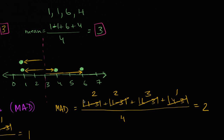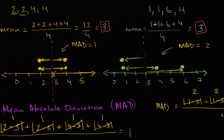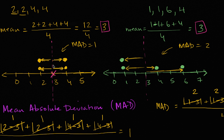So the mean absolute deviation for this second data set is two, while for the first data set it's one. That makes sense — they have the exact same mean of three, but the one on the right is more spread out. On average, each point in the second set is two away from three, while in the first set each point is one away. The MAD of the first is one; the MAD of the second is two — so the second data set is more spread out from the mean.